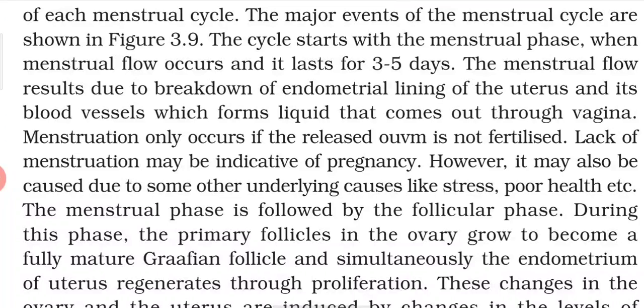Menstruation only occurs if the released ovum is not fertilized. If fertilization does not occur, menstruation takes place. If the ovum is fertilized, pregnancy occurs. Lack of menstruation may be indicative of pregnancy, but it may also occur due to stress or poor health. So it is only an indication — it is not confirmed that the person is pregnant.